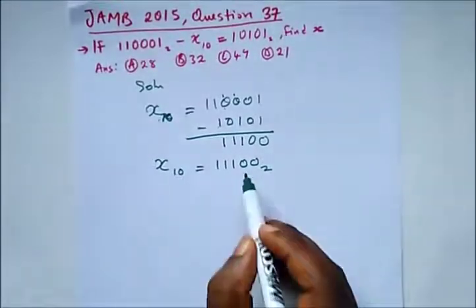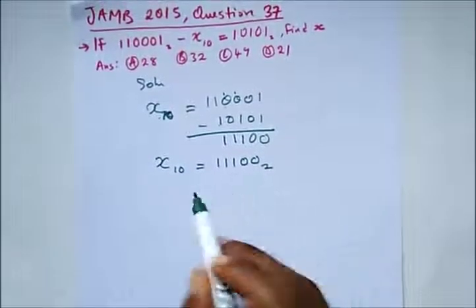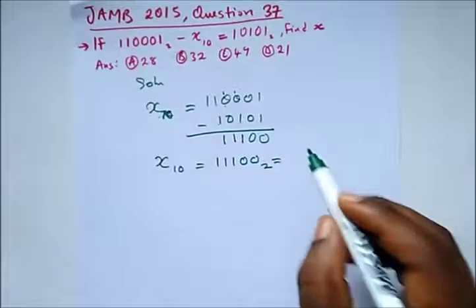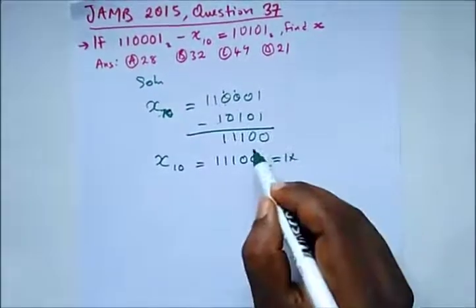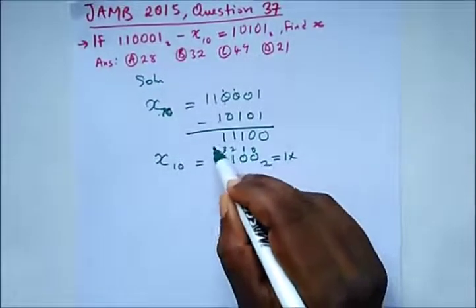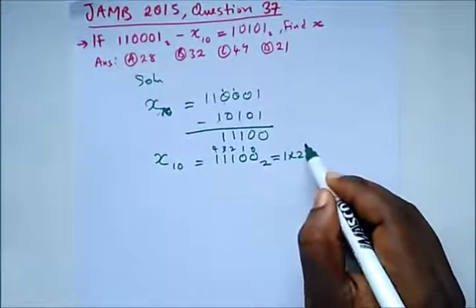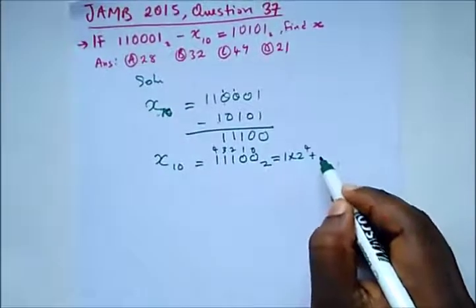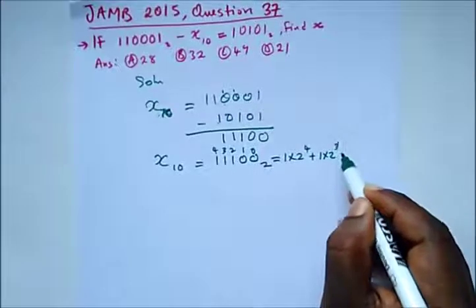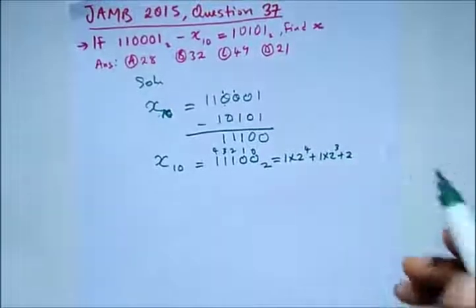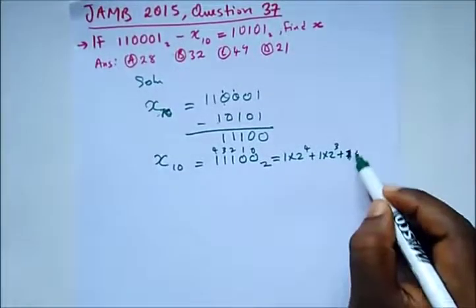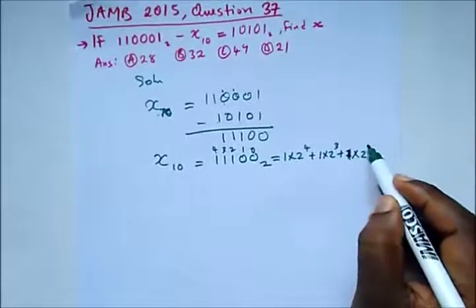So from here we have X base 10 equal to 1110 base 2. So all we need to do is convert this to base 10. This will give us 1 times 2 raised to power 4 plus 1 times 2 raised to power 3 plus 1 times 2 raised to power 2.